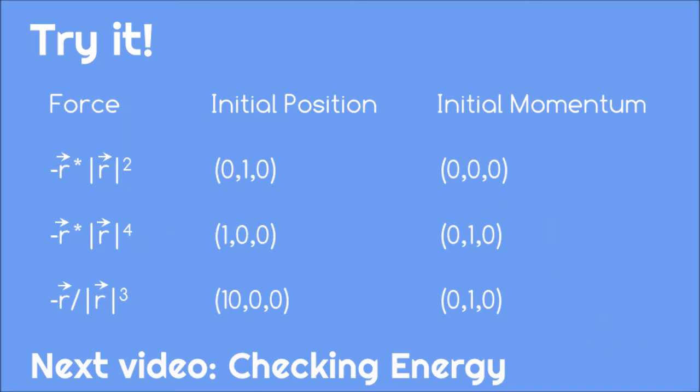You should now be able to evaluate the accuracy of your Euler-Cromer method by varying the step size. Follow the link in the description below to use this code to apply the Euler-Cromer method for the following forces and initial conditions and identify an appropriately small step size. In the next video, we'll look at how we can check our results by evaluating the total energy in the system.